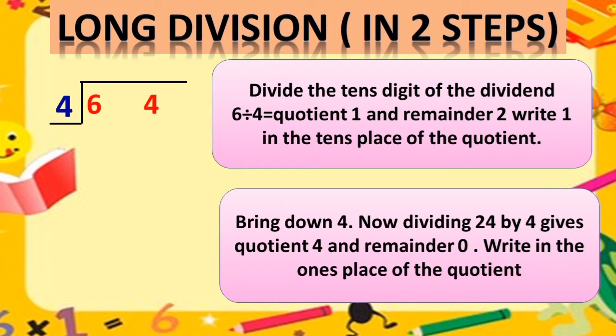Divide the tens digit of the dividend. Now what do you do? Tens digit of dividend. What do you do? Divide. What do you do? Divide. And here the tens digit of the dividend is 6. Now you have to check the 4 times table. 4 ones is 4.